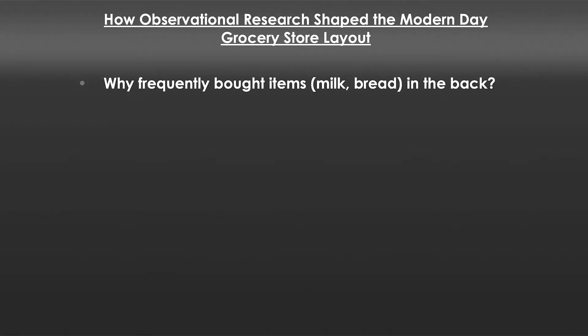Why are frequently purchased items like bread and milk typically towards the back of a supermarket? The answer Paco Underhill gives is that it increases incidental purchases. Many people who shop in stores don't plan out every single purchase they're going to make — they just pick stuff up along the way. If the staple goods like breads, milks, and eggs were right at the front of the store next to the cash register, they'd just walk in, buy their milk and eggs, and leave, never having a chance to buy extra things. So stores put those in the back to force you to walk through the store first, increasing incidental purchases.